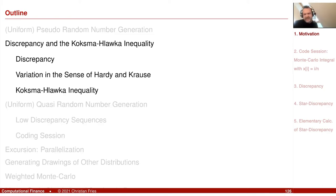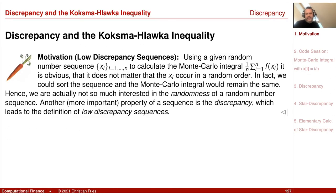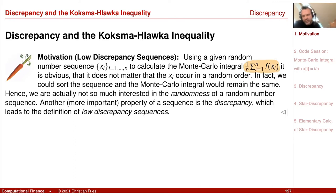Today we have a very nice result: the Koksma-Hlawka inequality. Before I come to that, let's think again about our sequence. We had the nice result that our Monte Carlo average — evaluations at random points, f of xi — converges to this integral.